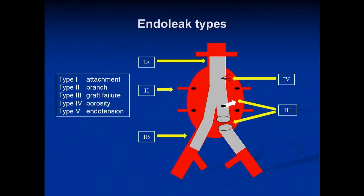If you look at endoleak types — and I'm not really a fan of the term endoleak; really what you're talking about is graft failure — type 1 endoleaks are either a proximal graft fixation or attachment failure, or type 1B is a distal attachment failure. Type 2 are native branches that continue to supply arterialized pressure to the sac. Type 3 endoleaks represent a graft failure, either a hole in the graft or a junction separation, and really type 1 and type 3 endoleaks need to be repaired — these are essentially like having no repair at all, as the aneurysm is still subject to the full arterial pressurization. Type 4 endoleak is graft porosity, not much of an issue nowadays. And type 5 endoleak, or endotension, refers to aortic expansion in the absence of visible endoleak on imaging.